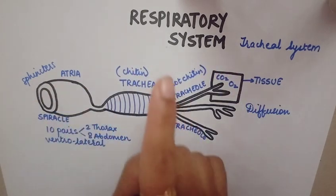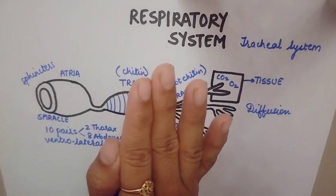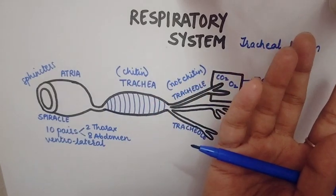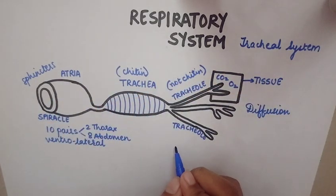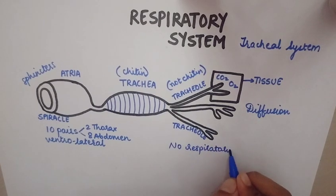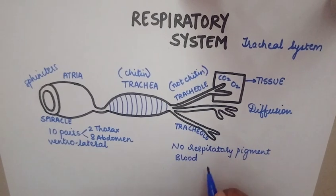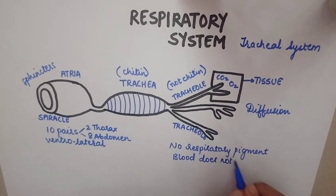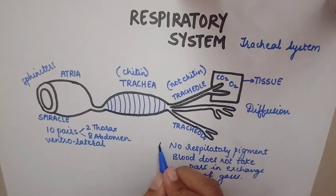In the case of the cockroach, blood or the body fluid does not transport gases — it just acts as a medium for diffusion. Since there is no respiratory pigment, blood does not take part in the exchange of gases. This is an important point to remember for the cockroach.